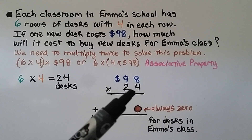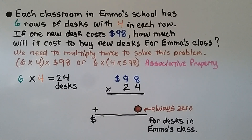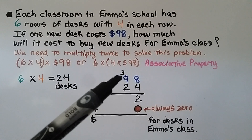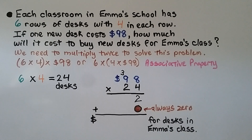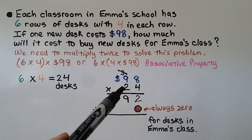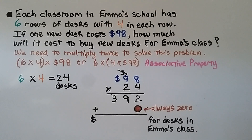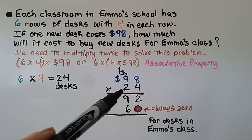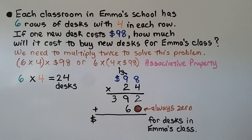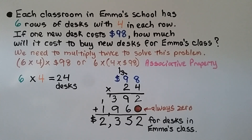Starting with the ones place: 4 times 8 is 32; regroup the 3 and write the 2. Then 4 times 9 tens is 36 tens, plus 3 more is 39 tens. Cross off the regrouped number so we don't confuse ourselves. This spot is always zero. Then 2 tens times 8 is 16 tens; regroup the 1 and put the 6 down. Then 2 tens times 9 tens is 18 tens, plus 1 more ten is 19 tens. We add our partial products and find it will cost the school $2,352 for new desks for Emma's classroom.